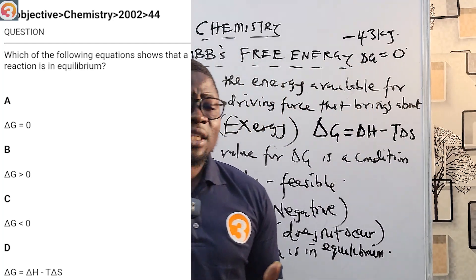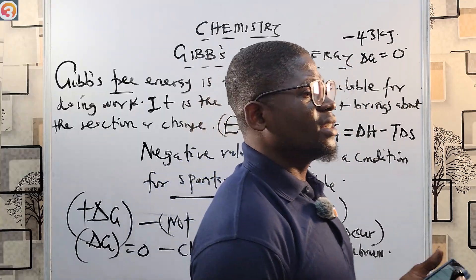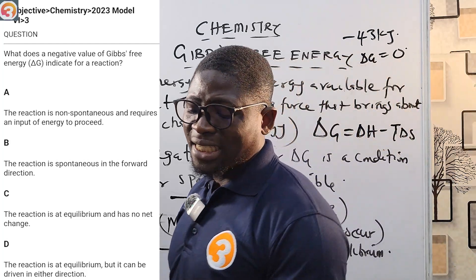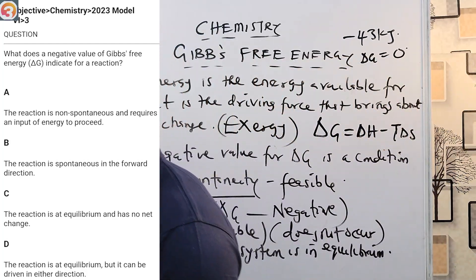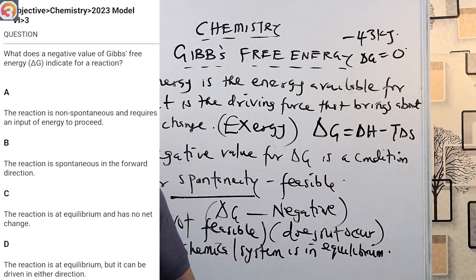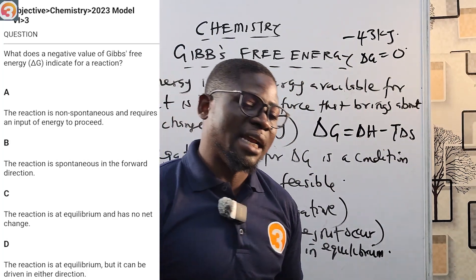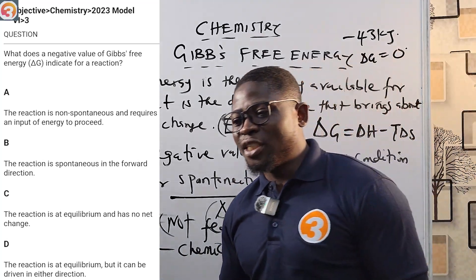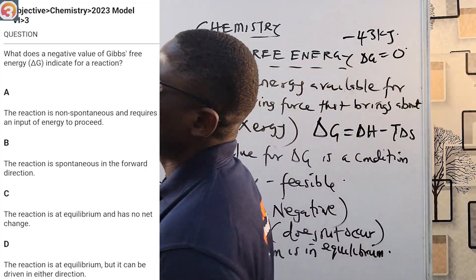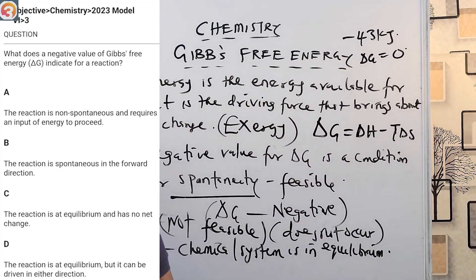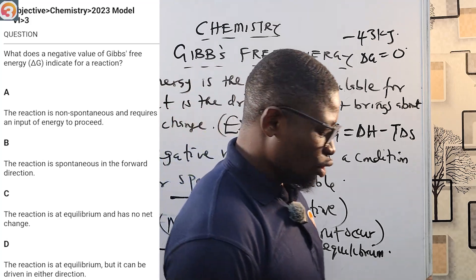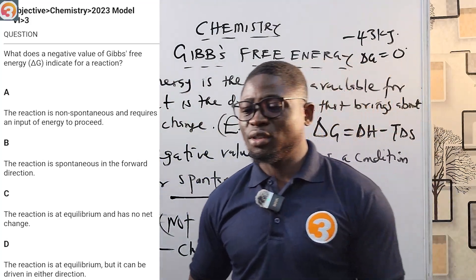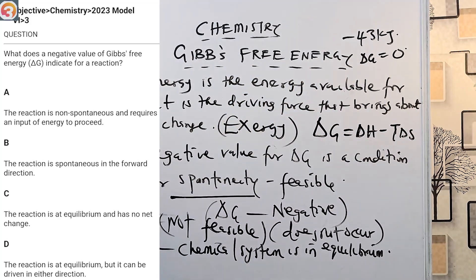The last question is from 2023, number 3: what does a negative value of Gibbs free energy indicate for a reaction? A negative value of Gibbs free energy is a condition for spontaneity — it means the reaction is feasible.